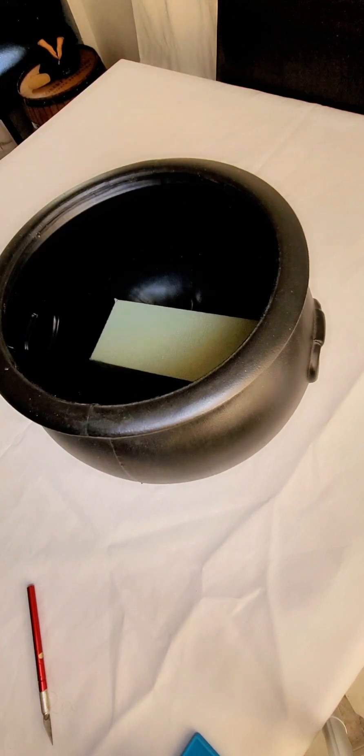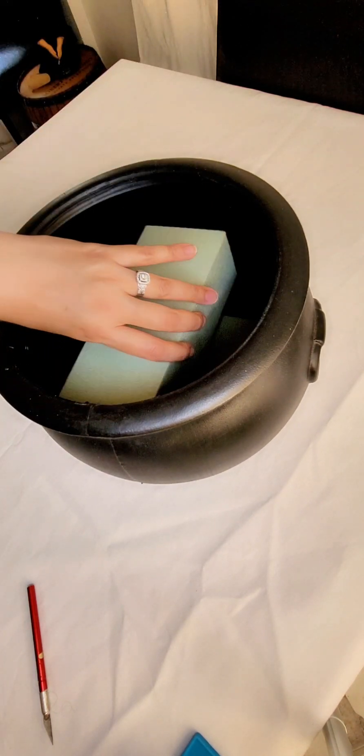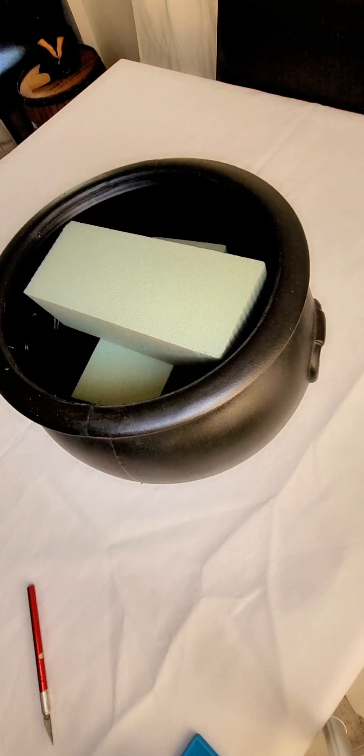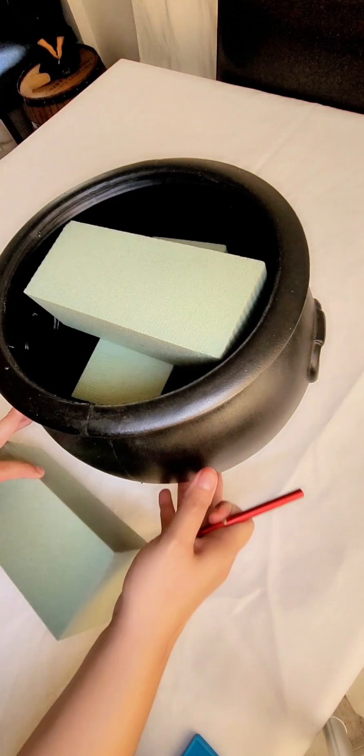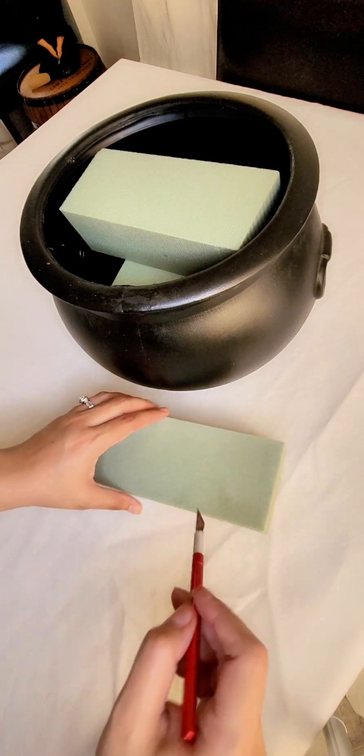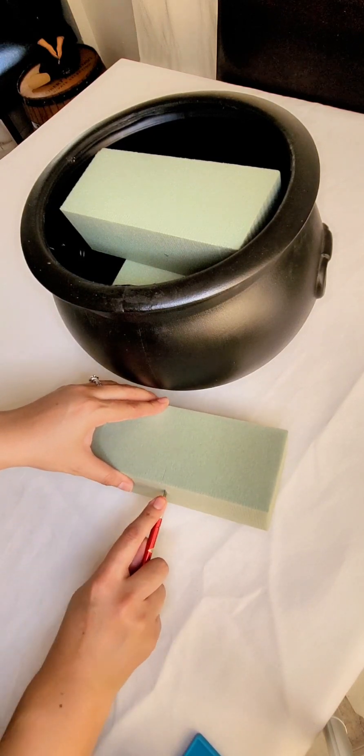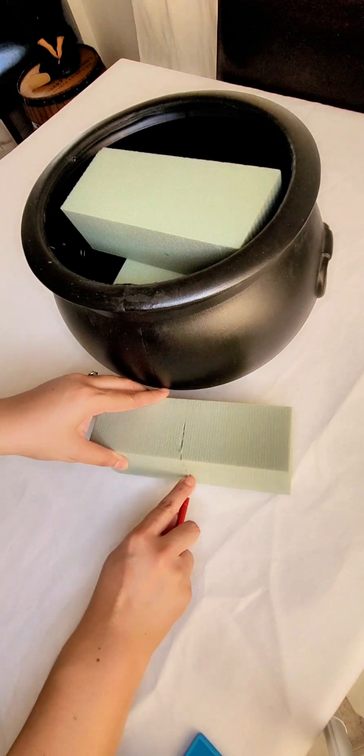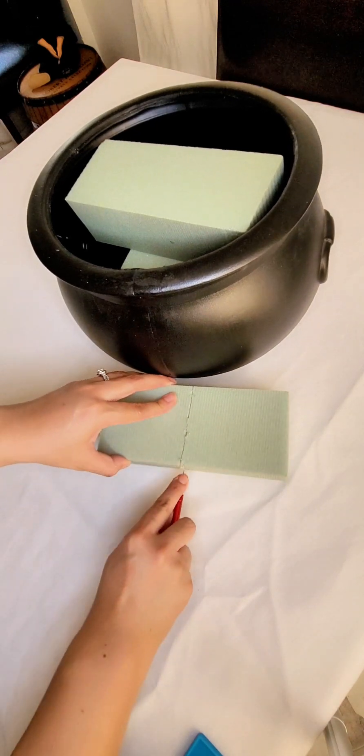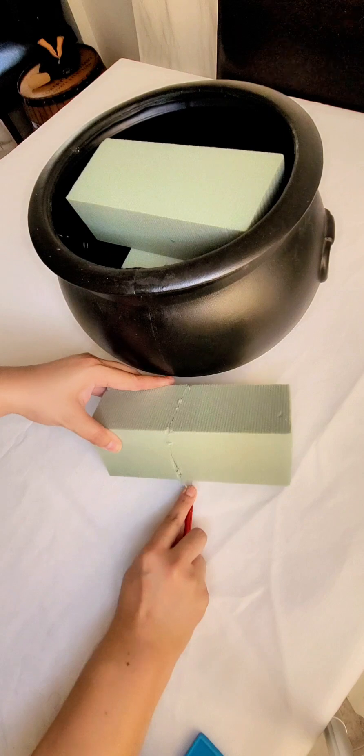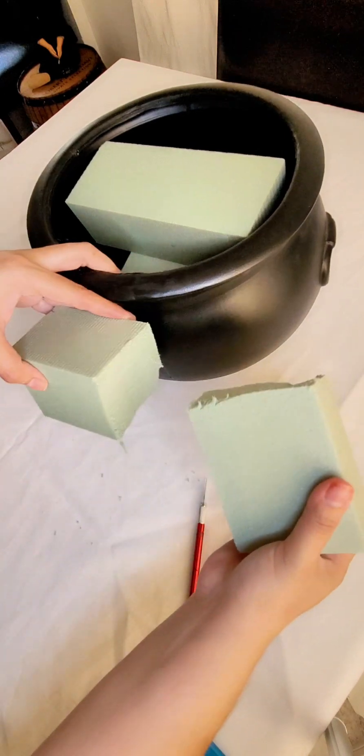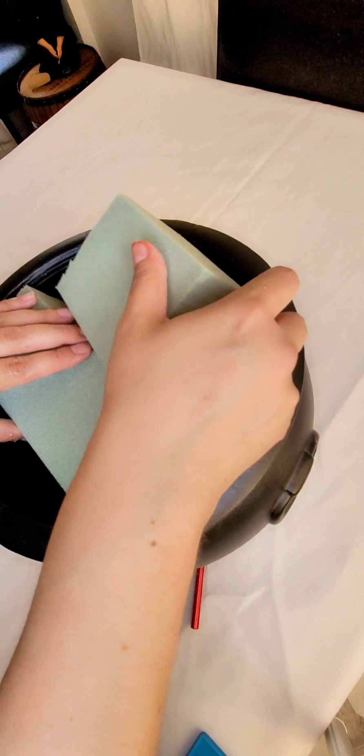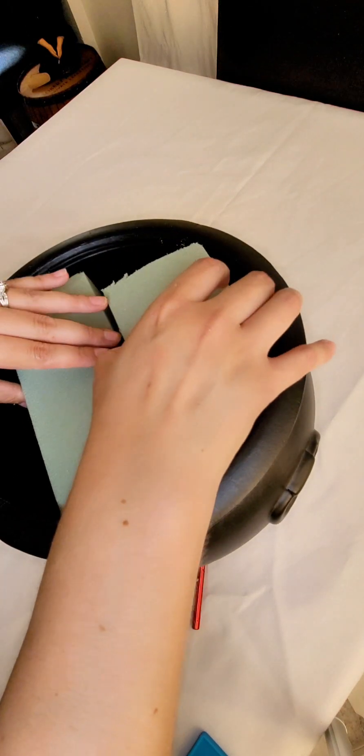First, begin by placing your dry floral foam inside the cauldron. I'm adding the floral foam all the way to the top of the cauldron, to the rim, to create a flat top. I'm using my exacto knife to cut the floral foam into smaller pieces to fit in between the gaps of the cauldron.